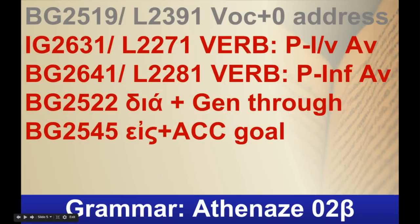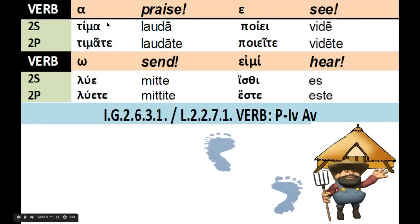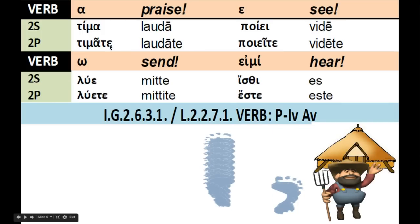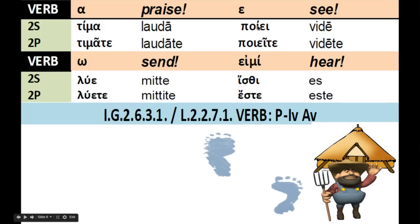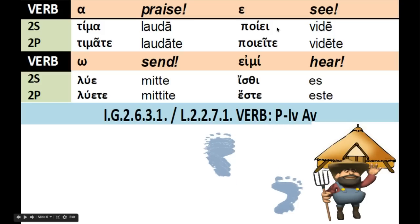Let's talk about the imperative. When you give a command in Greek, it's a shortened version. Therefore: tima, timate, lue, lue-te, poie — why is it poie? Why is that imperative? Because it's an epsilon contract. Poie-te. And isti, este.